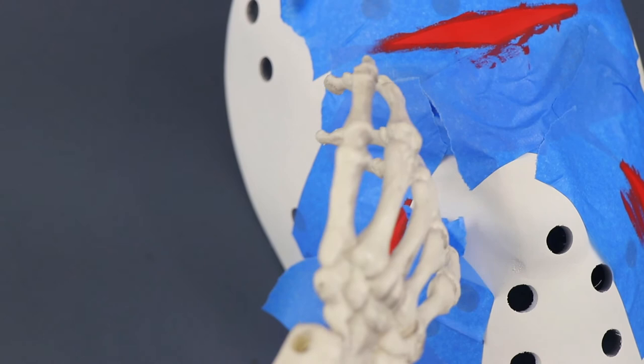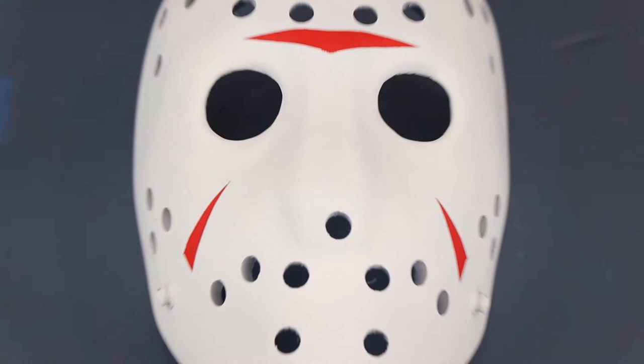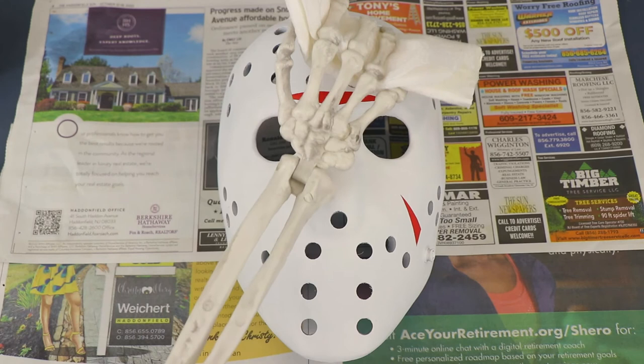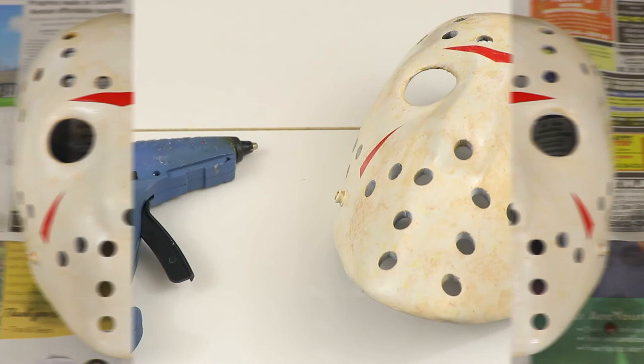Once this is dry, we will remove the tape and move on to staining the mask. In order to stain the mask, we're going to be using a medium darkness wood stain, and we'll be applying it sporadically across the mask with a paper towel.